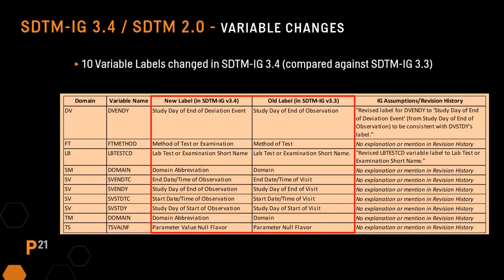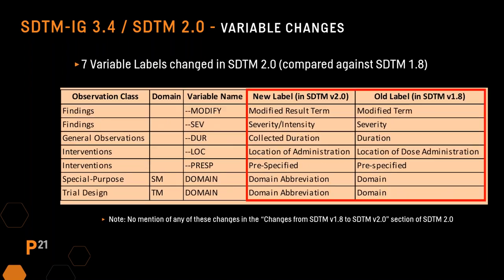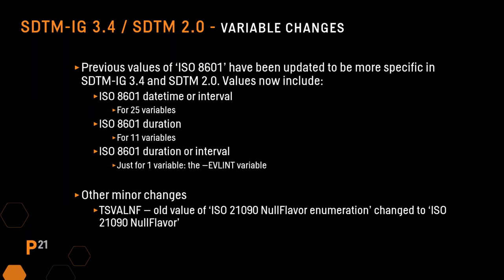There are 10 variables in the implementation guide that have a different label than the previous version. There are also seven variable labels that were changed in SDTM 2.0. Variables that previously had a format of ISO 8601 now have a more specific format, differentiated between ISO 8601 date time and ISO 8601 duration. There is also a minor change to the wording for the ISO 21090 null flavor code list.